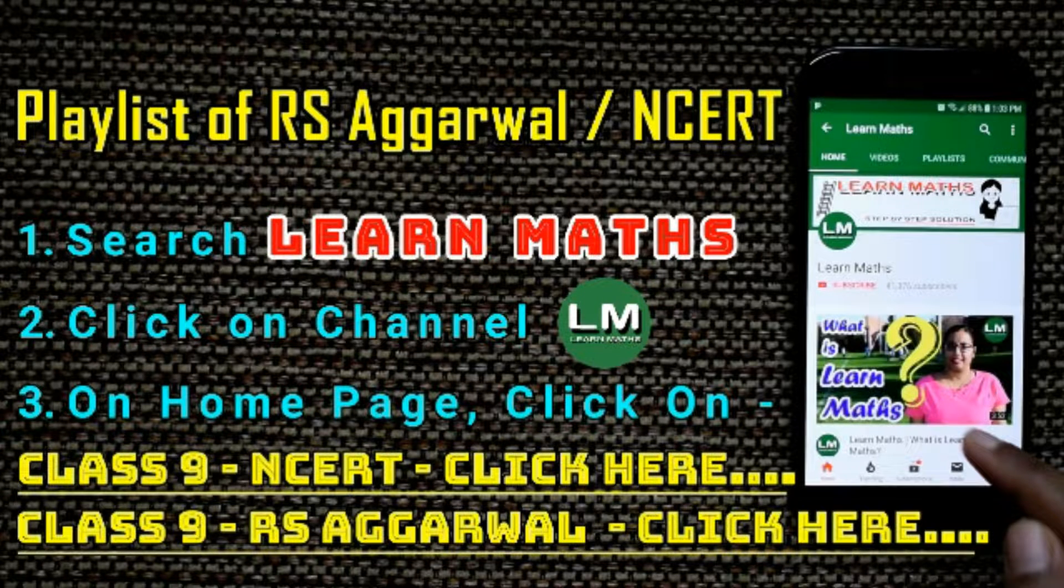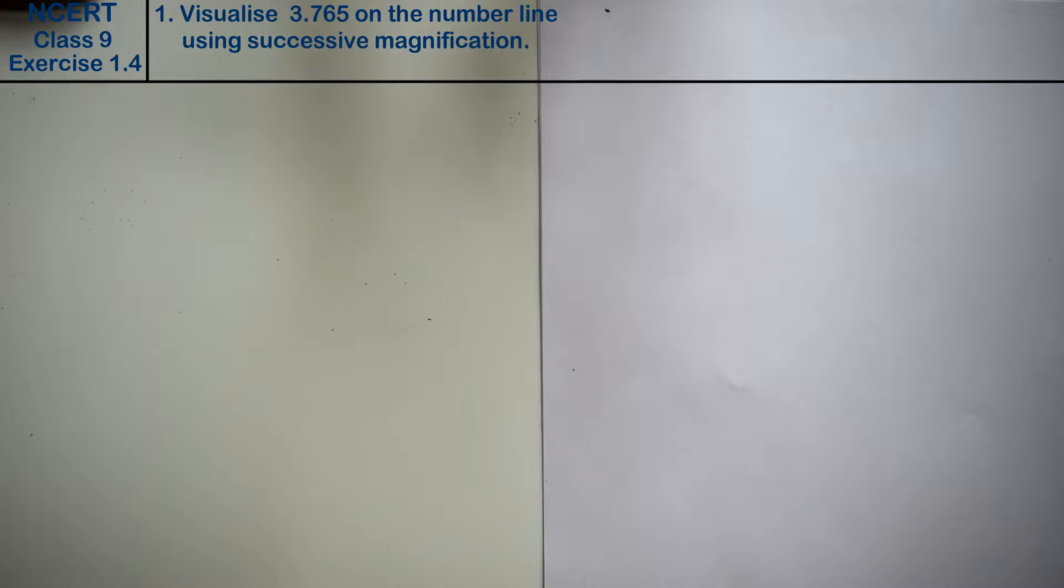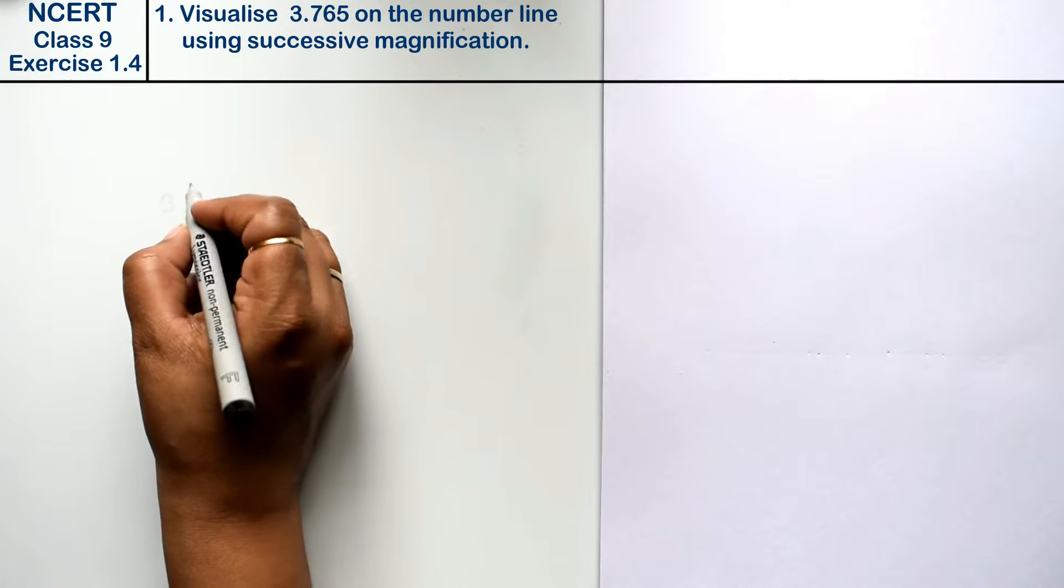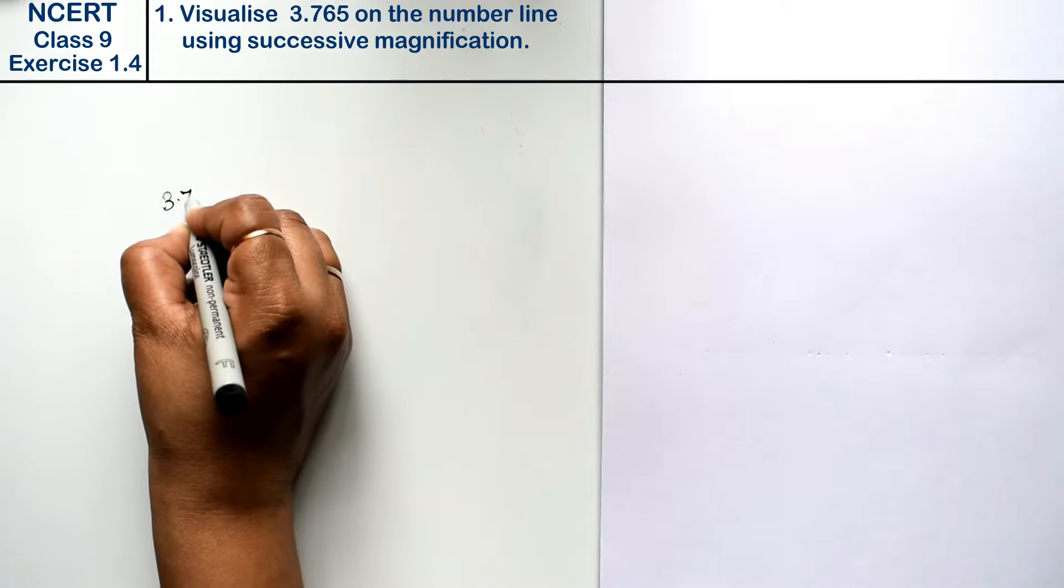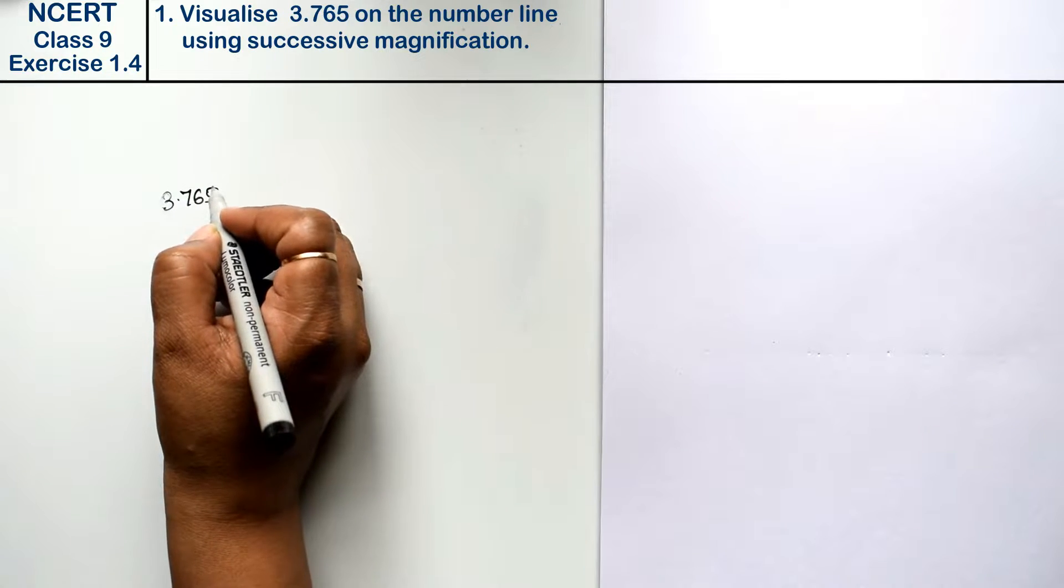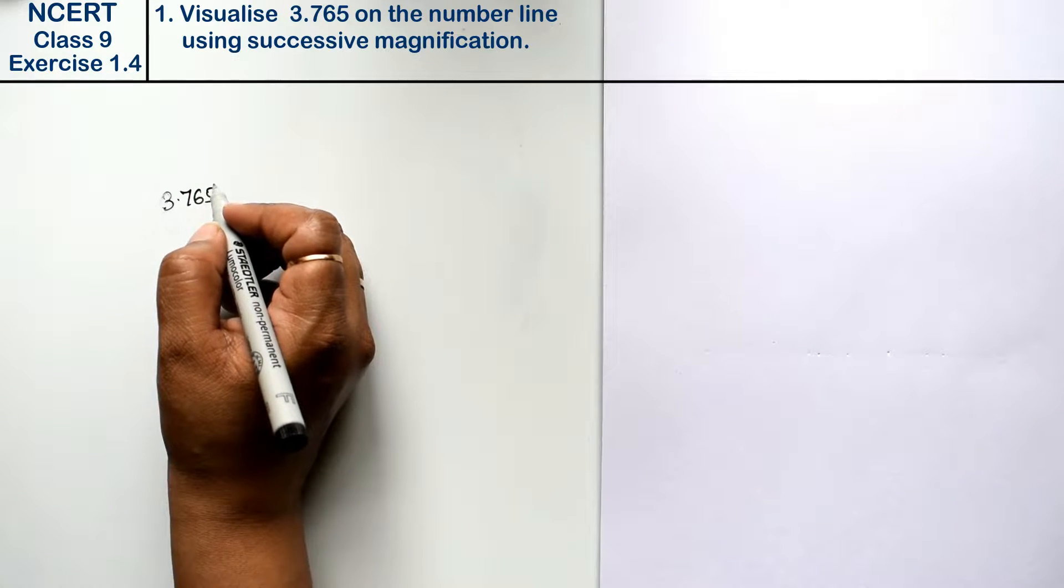Let's do question number first of exercise 1.4, that is number system. Question number first is visualizing the representation of 3.765 on a number line by successive magnification.